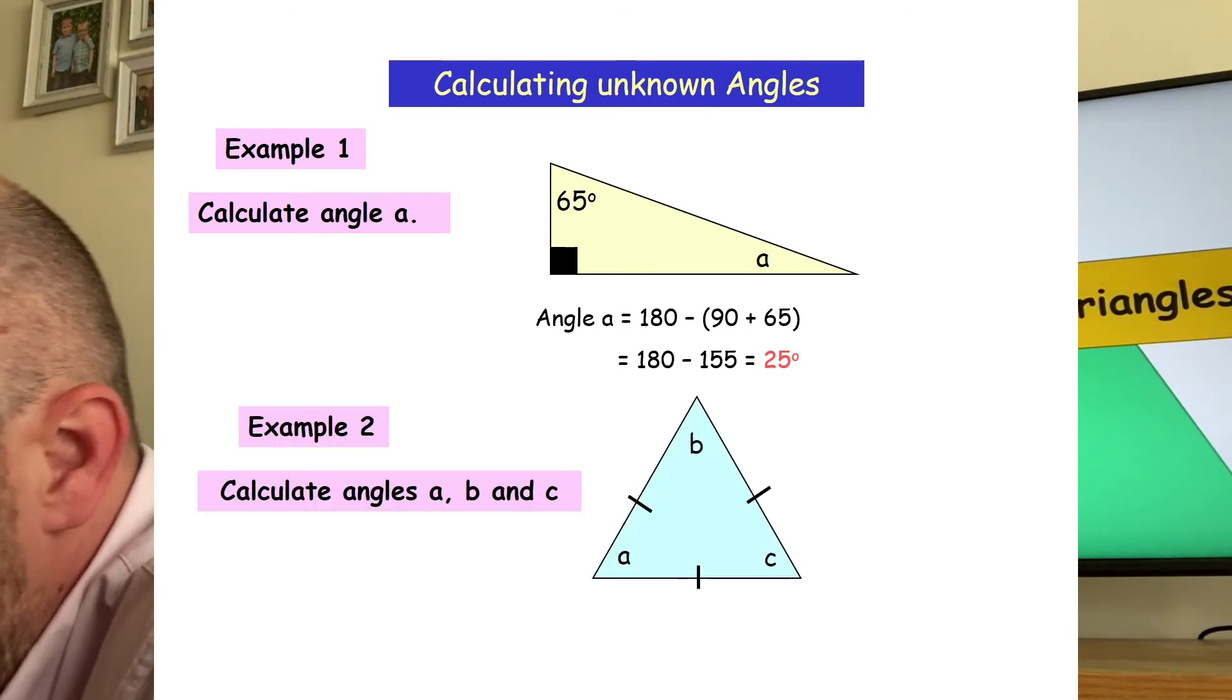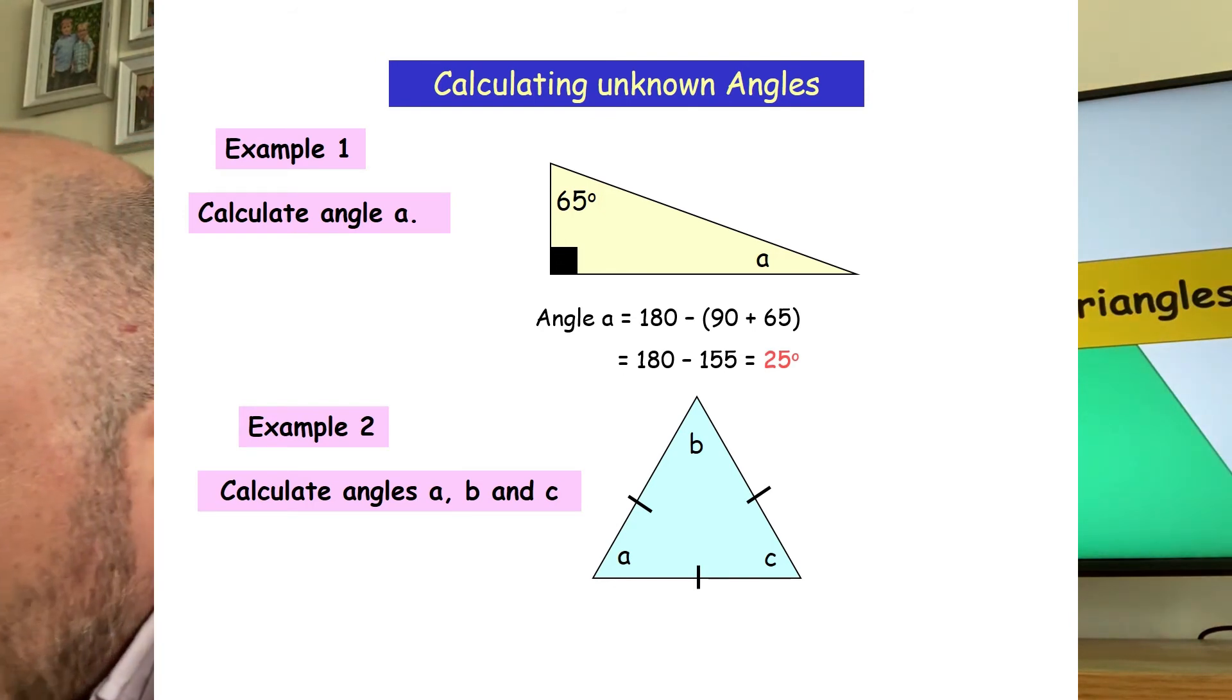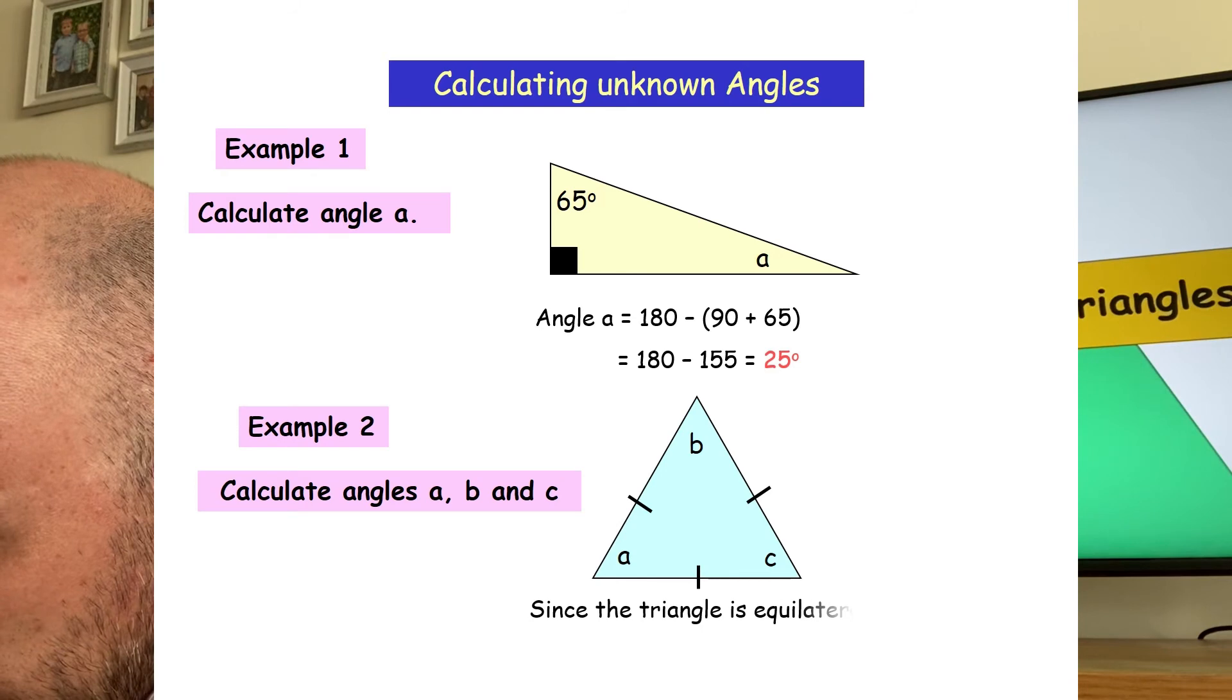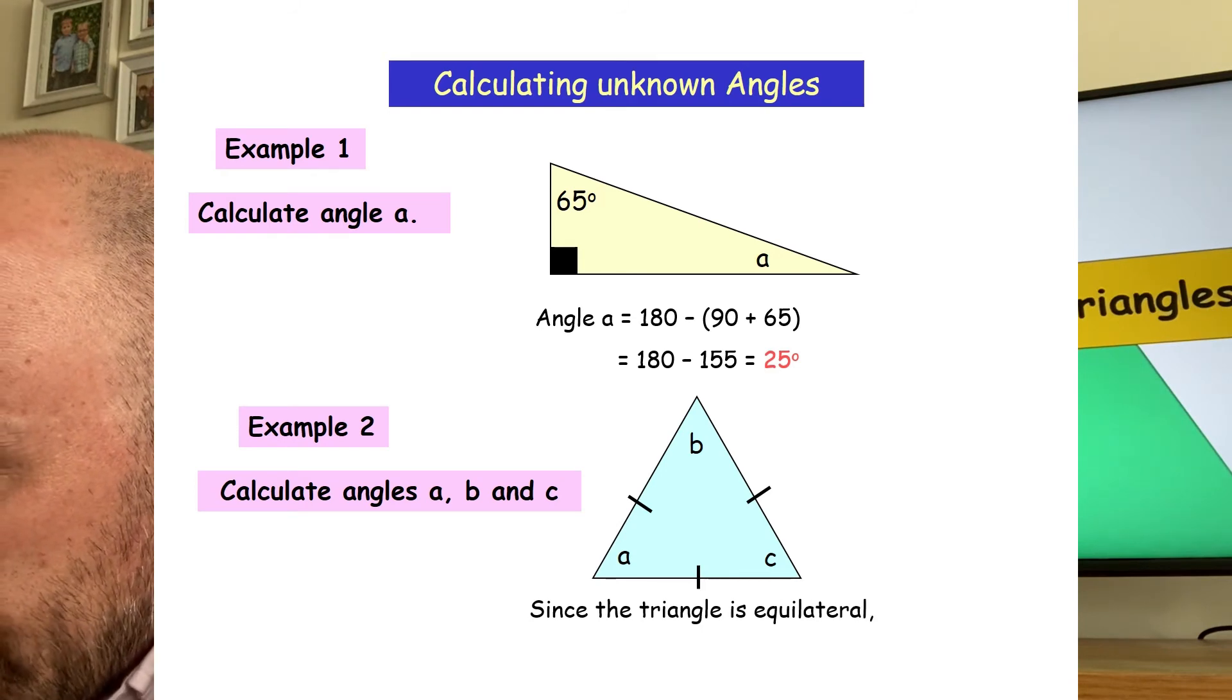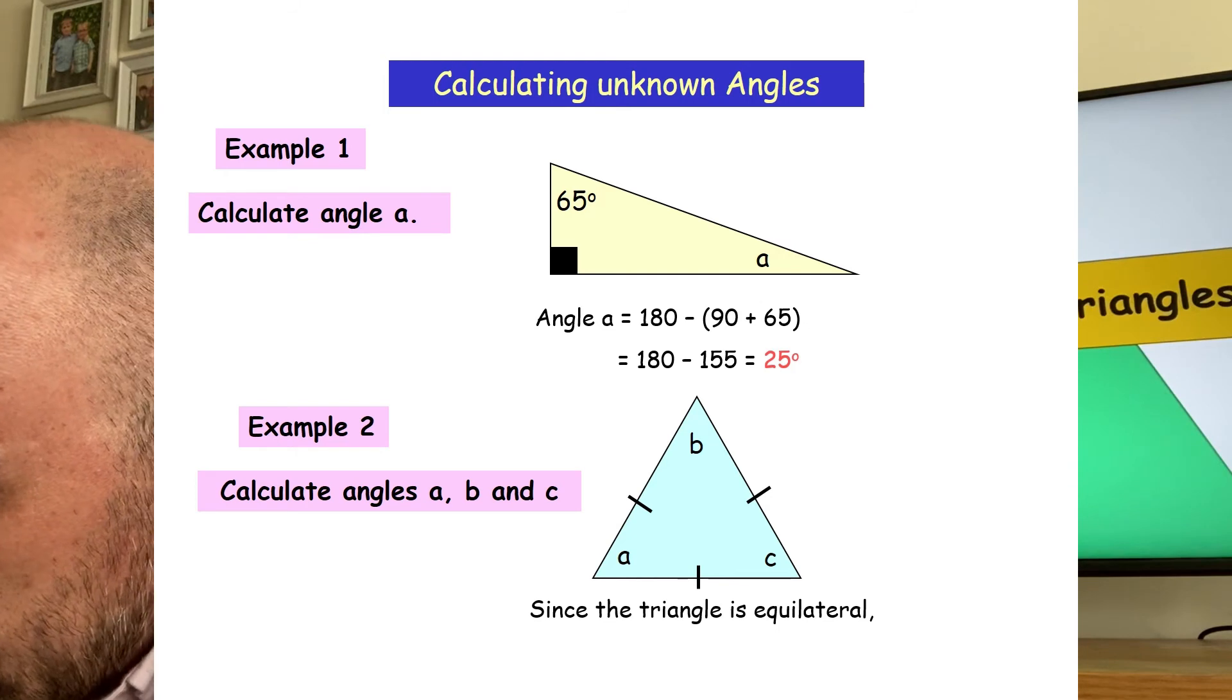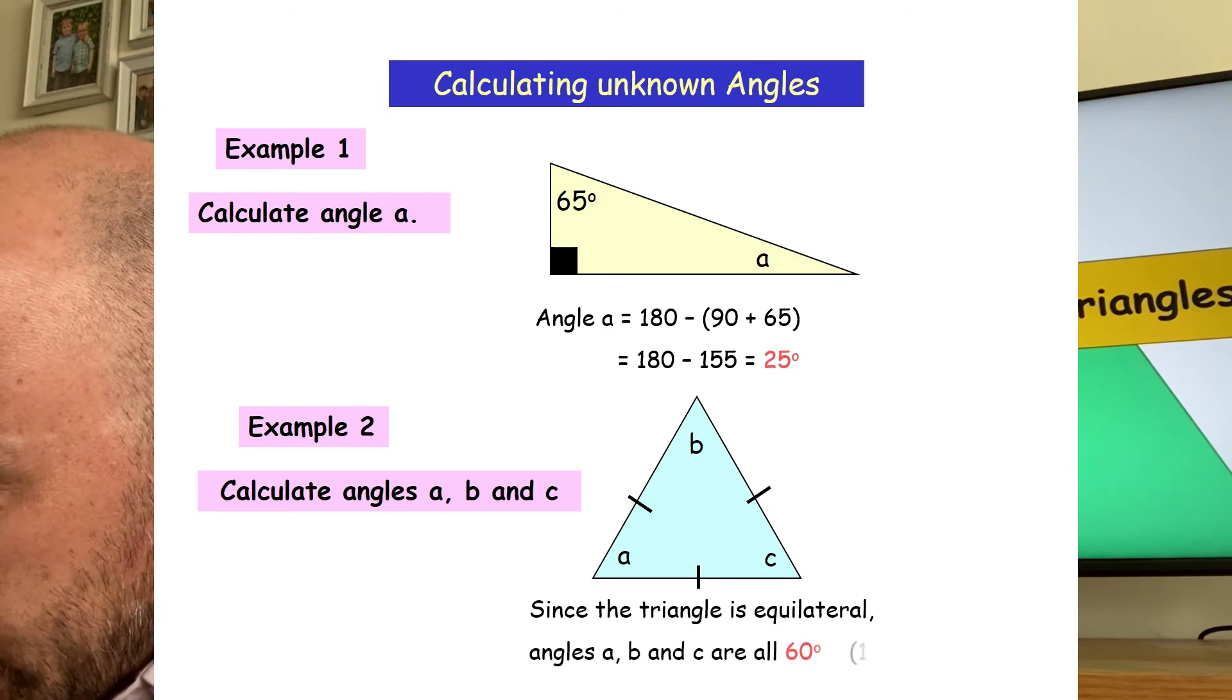My second example is an equilateral triangle. I know it's equilateral because it's got those lines on each, those short lines on each side, which tells me that they are the same length. So that means that each angle is going to be 60 degrees.